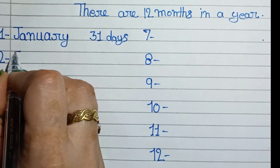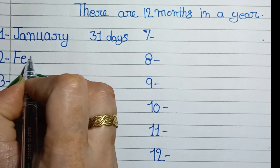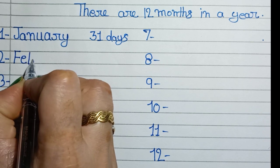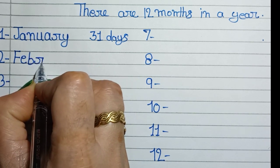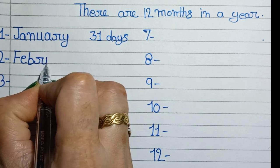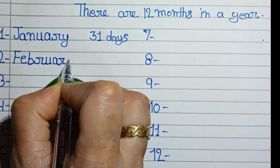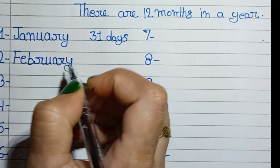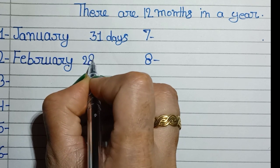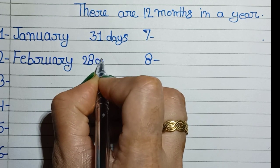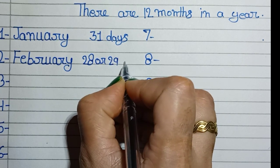February. F, E, B, R, U, A, R, Y. February, 28 or 29 days.